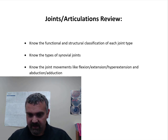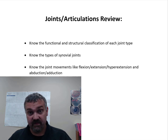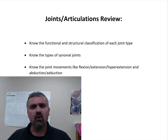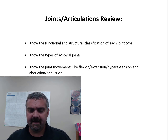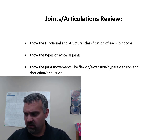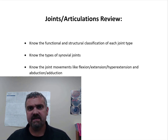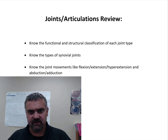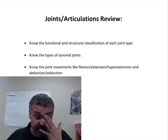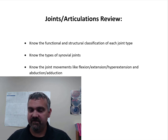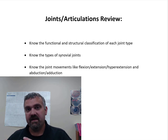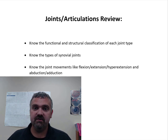For structural classifications, we basically have fibrous joints, cartilaginous joints, and synovial joints. Fibrous joints — think holding things together. They actually resist movement and hold things together rigidly. Cartilaginous joints resist compression — when things are squeezed together, these cartilage pads absorb that force. And then your synovial joints — their primary function is movement.